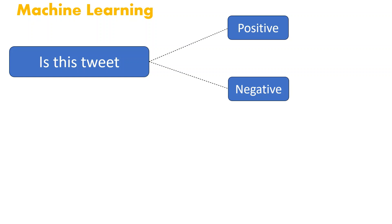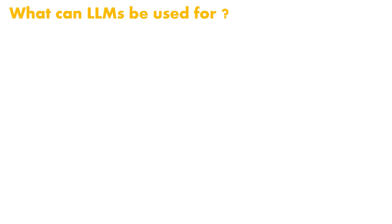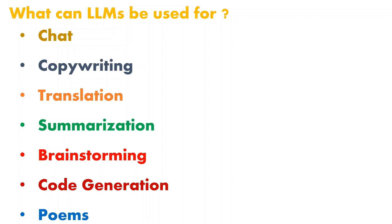If you are familiar with machine learning, you know that in machine learning we can train a model for a specific task — like classifying whether a tweet is positive or negative, or converting text from French to English. But what makes LLMs so powerful is that one model can be used for a whole variety of tasks, which include chat, copywriting, translation, summarization, brainstorming, coordination, poems, and many more.